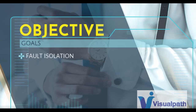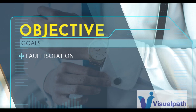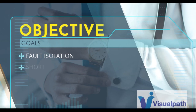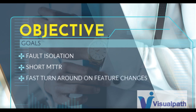Let's reiterate our objectives. There'll be quick fault isolation, shorter MTTR, and faster turnaround time. So any new request or new feature change that needs to be done can be done quickly without disrupting too many things. These are our objectives in setting up a continuous integration pipeline.